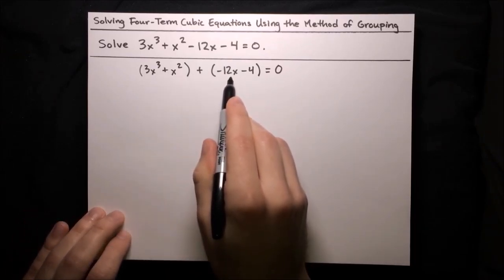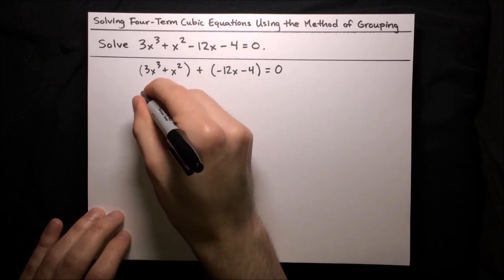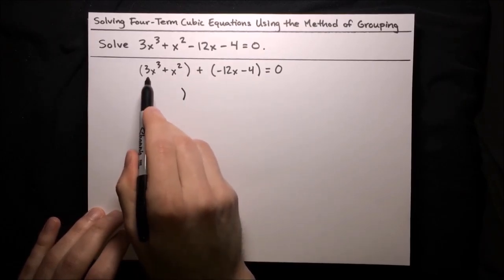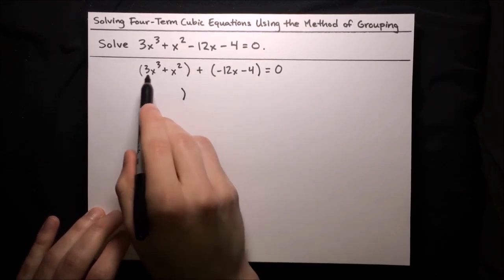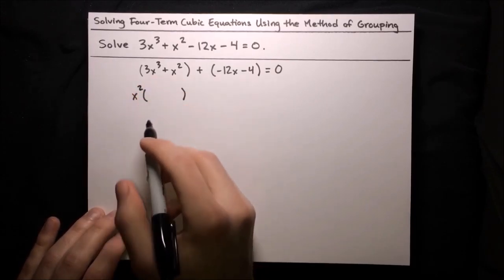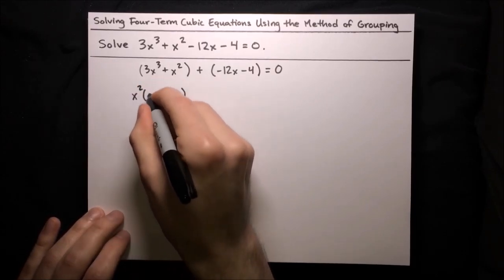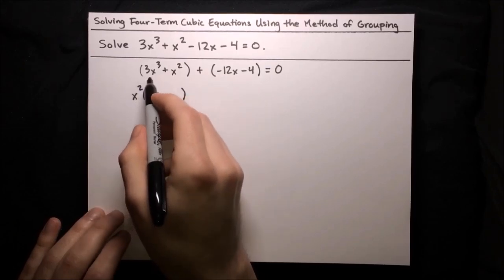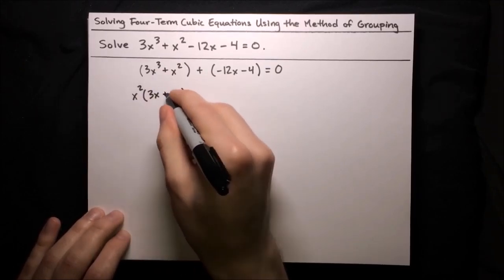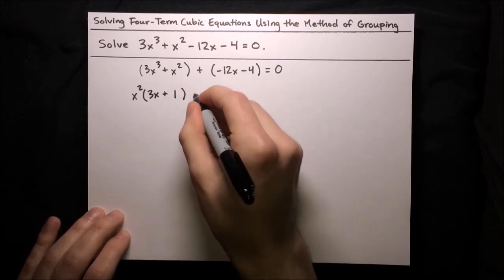Now let's continue with our factoring. In each group, we want to factor out the greatest common factor. Looking at the first group — any common factors? Well, we've got an x squared in both terms. So factor out x squared, and then x squared times 3x gives us 3x cubed, and x squared times 1 gives us x squared.